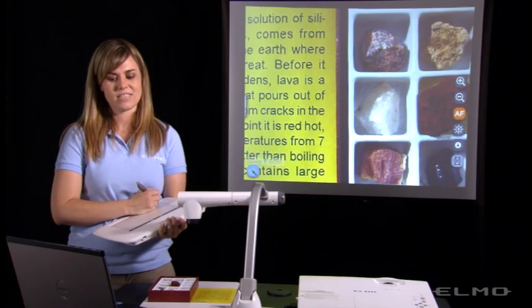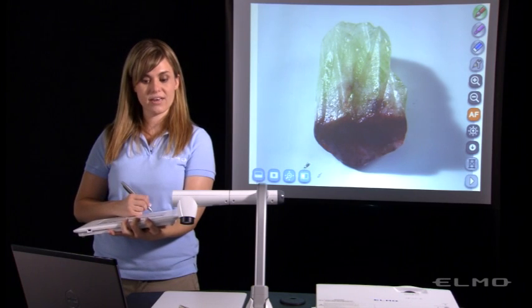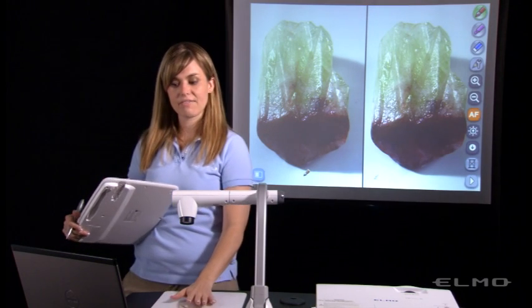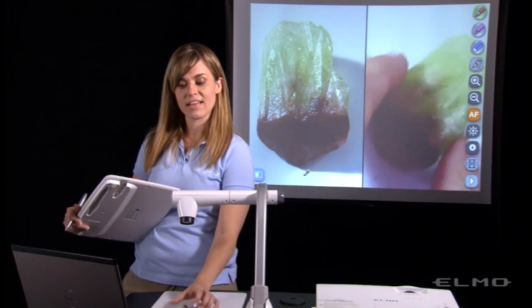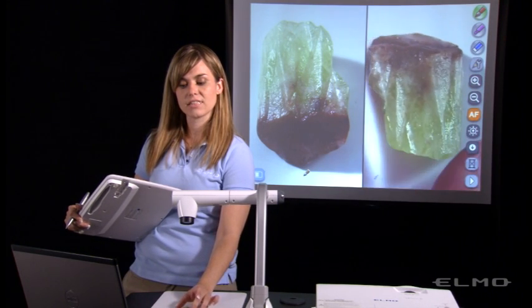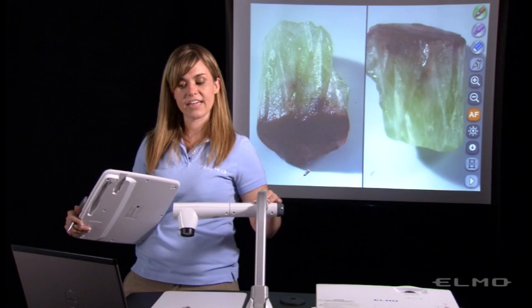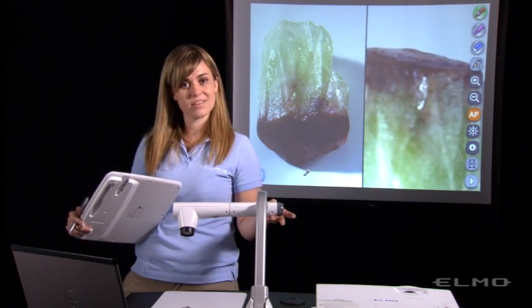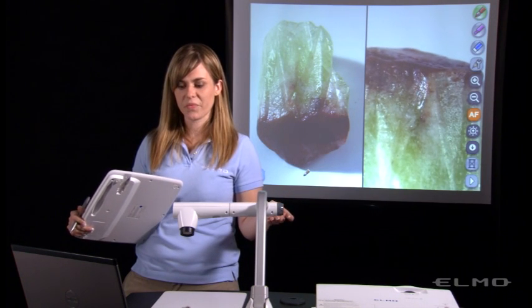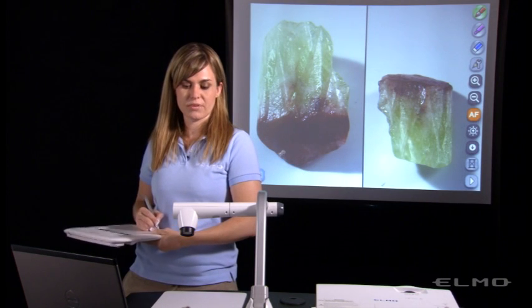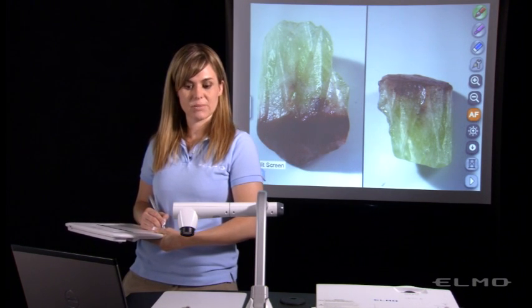The last presentation tool is a split screen. When I tap on this, I'm able to see the live image and the still image at the same time. Now I can see different angles. I can show the front of a page and the back of a page at the same time. I can compare students' work to the textbook. And to get back to your live image, you'll just press the same split screen icon.